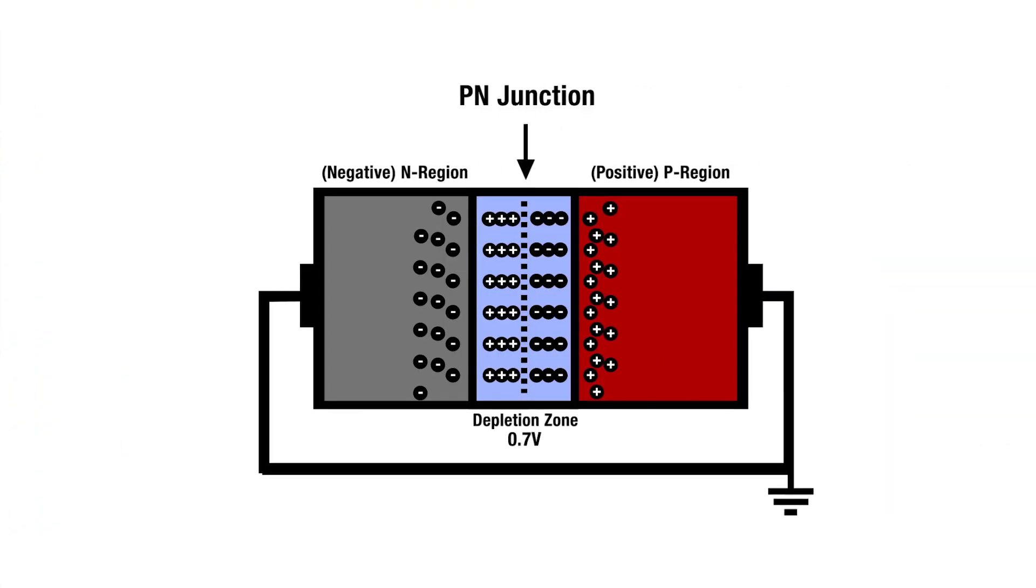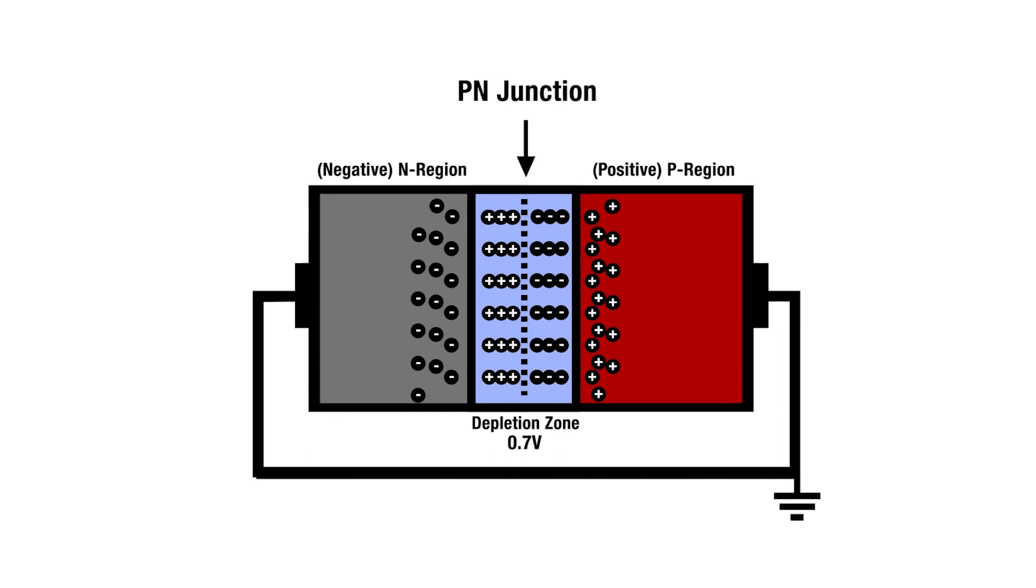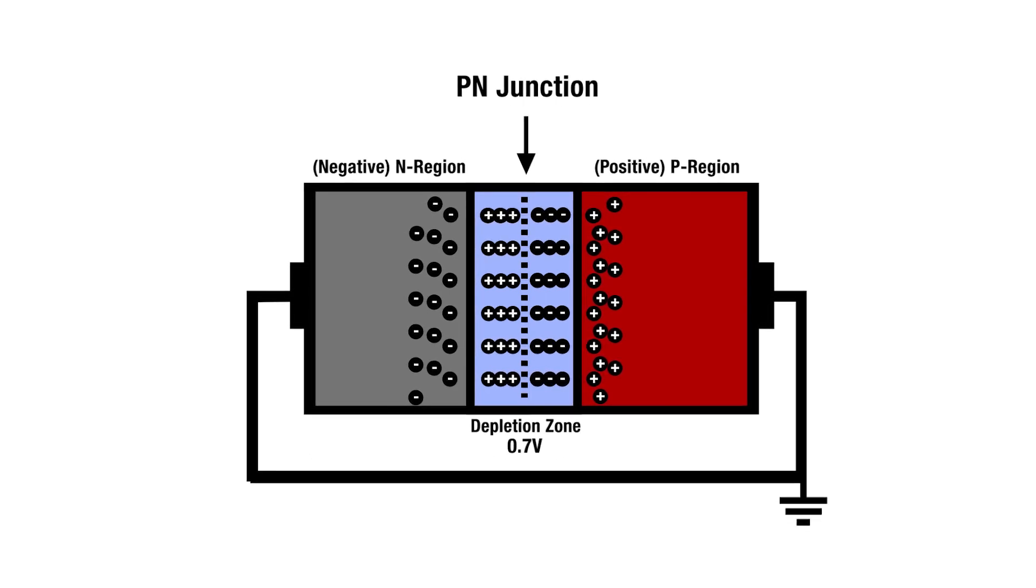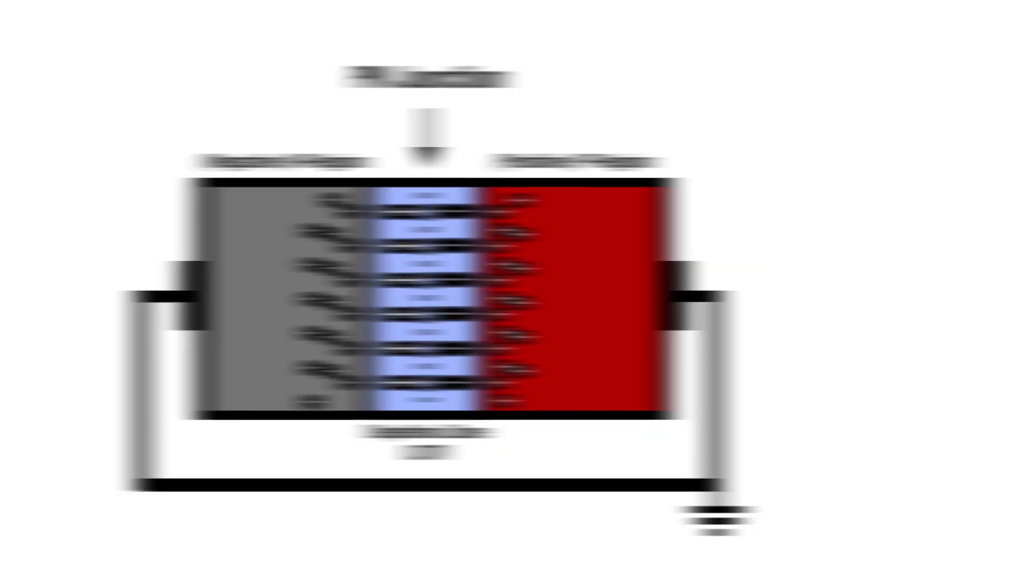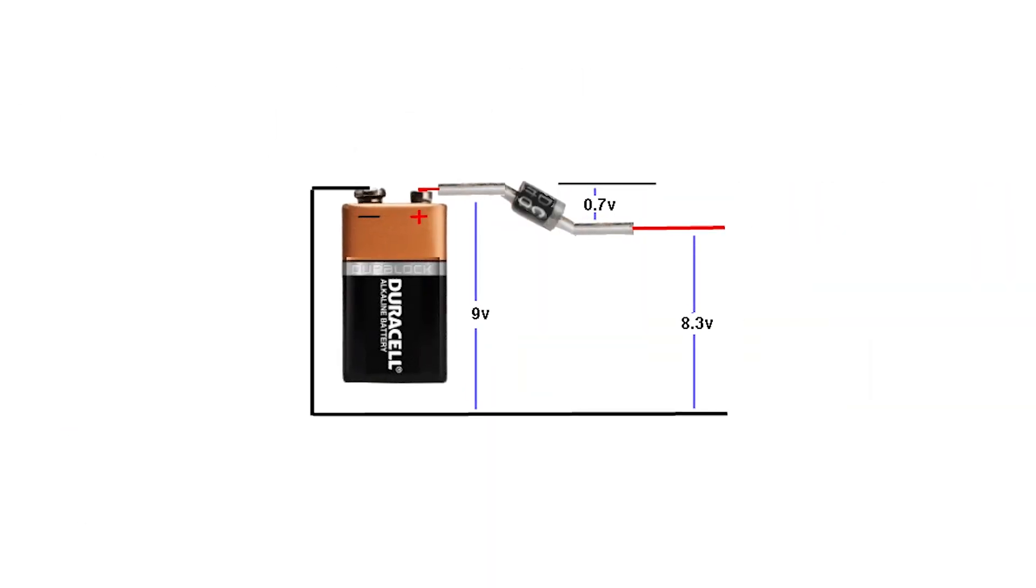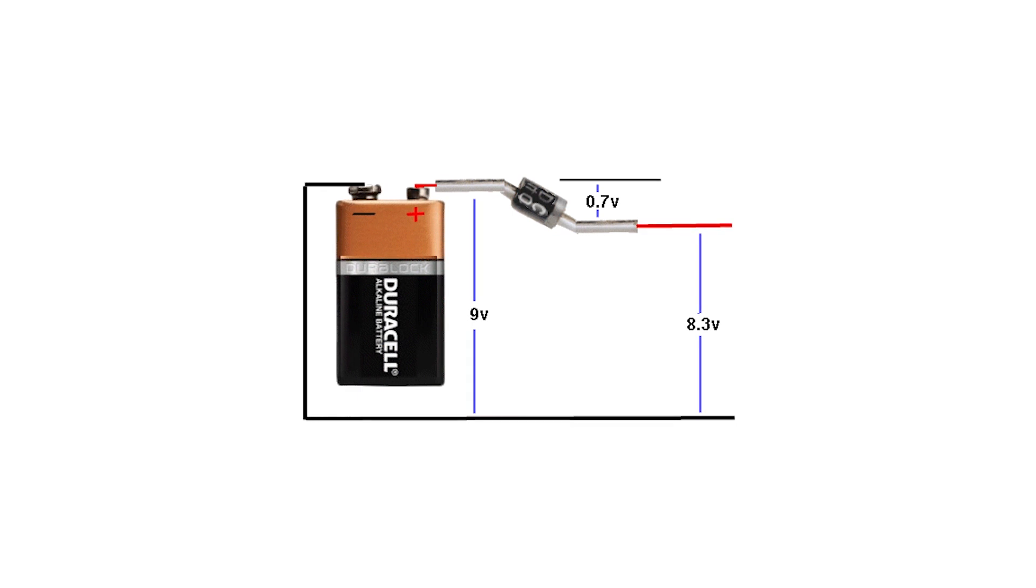I said that in a silicon diode, the charge at the depletion zone is around 0.7 volts. This is called the barrier potential, or threshold voltage. So to overcome the charge in the depletion zone, we need to supply at least 0.7 volts across the diode.